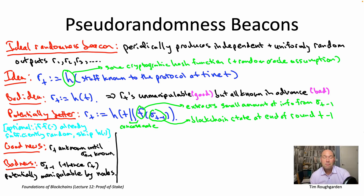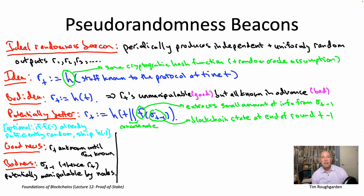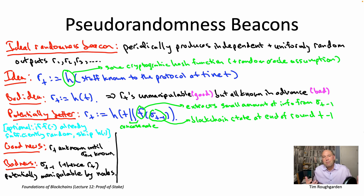The extent to which a node can manipulate R_t depends on exactly which function f you use. At one extreme, you could imagine a function f that's independent of the blockchain state — it just always outputs the empty string. That special case is actually exactly what our initial first idea was, so manipulating the input doesn't help you manipulate the output. At the other extreme, suppose f depends on the set of transactions included in the most recent finalized block. Then the block proposer at time step t-1 is exactly who typically chooses those transactions, so they can directly manipulate the output of f.